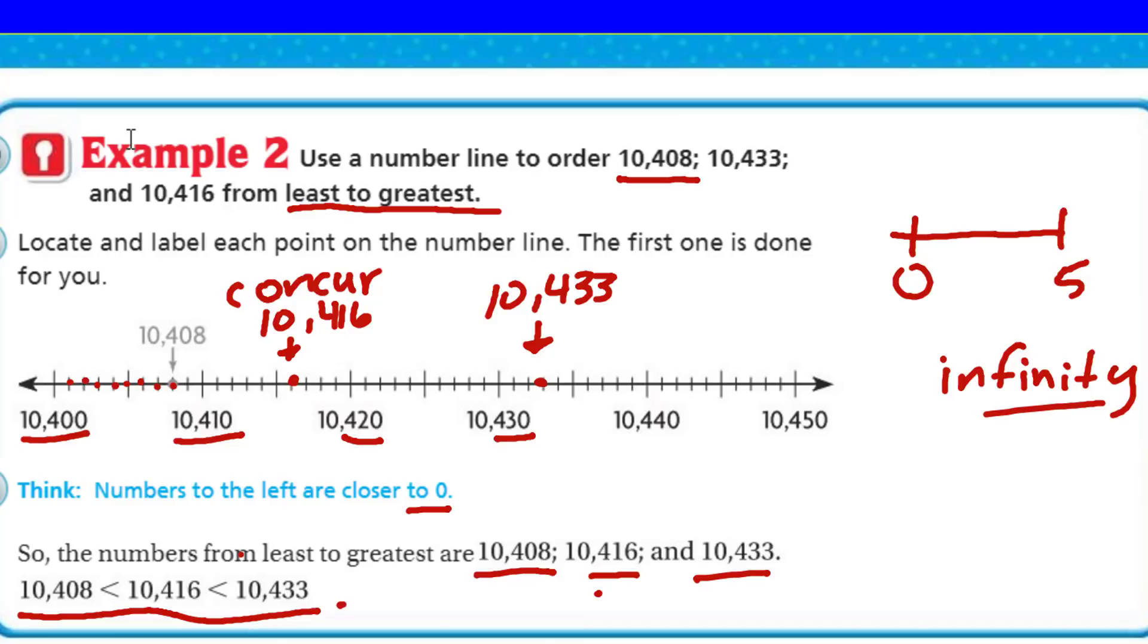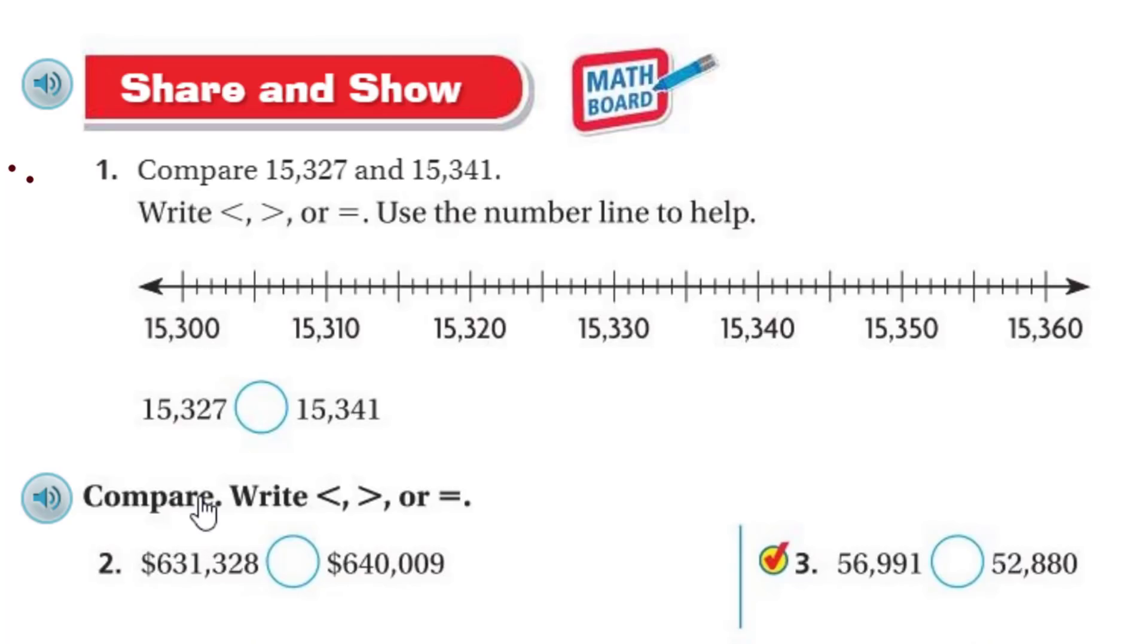Now, we must move on. The show must go on. I love this part. It's Sharon's show. That's right. This is if you have a math board, you want to get your math board out. Now, we're going to compare fifteen thousand one hundred twenty-seven, fifteen thousand three hundred forty-one. It says use the number line to help if you need some help.